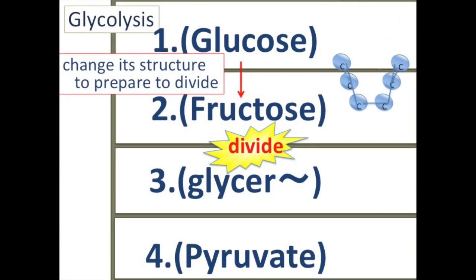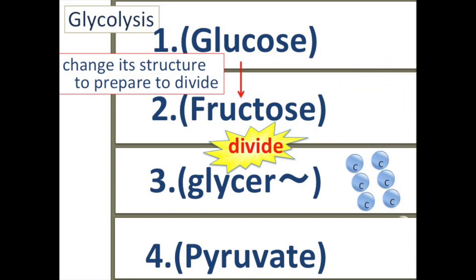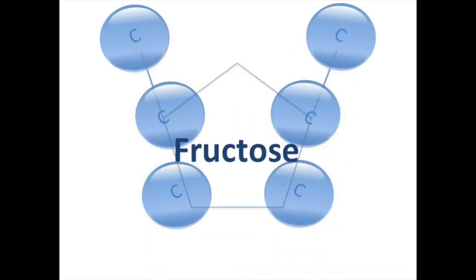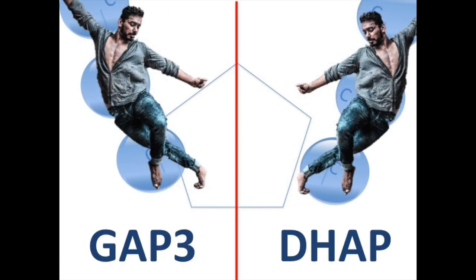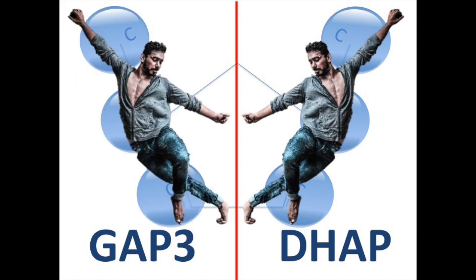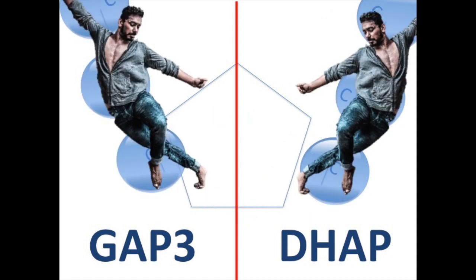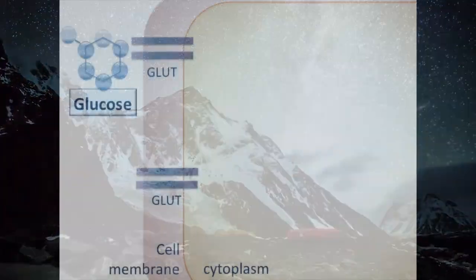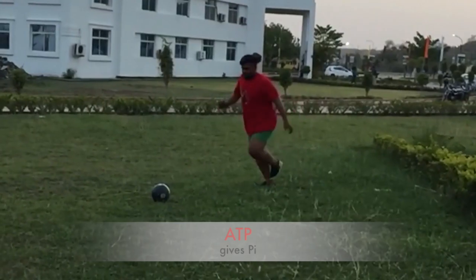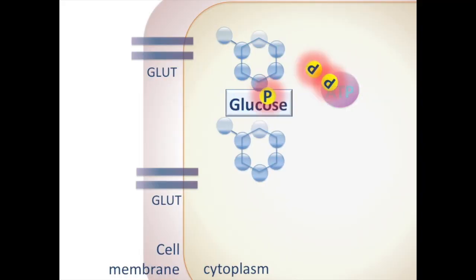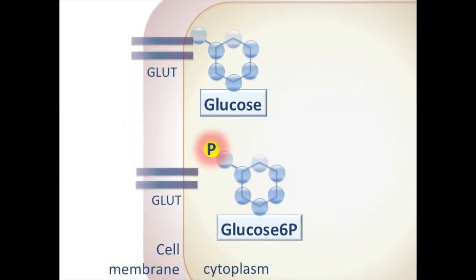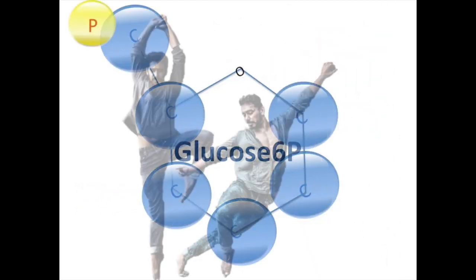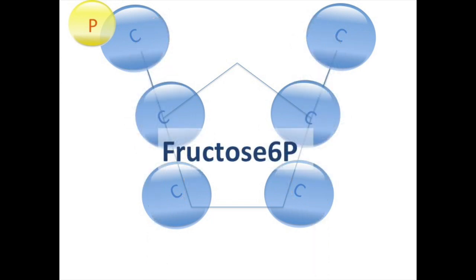Glucose is converted to fructose to prepare to divide. Let's remember phosphorylation reactions. Immediately after glucose gets into the cell, ATP gives it a phosphate group. Why? Because glucose easily gets out of the cell. Glucose-6-phosphate is converted to fructose-6-phosphate and prepares to divide.